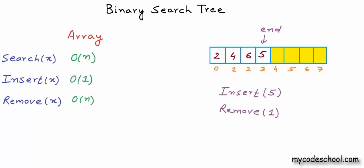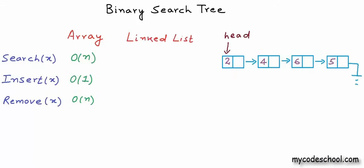Now let's discuss the cost of these operations if we use a linked list. I have drawn a linked list of integers here. The cost of search is again O(n), where n is the number of nodes — in worst case we traverse the whole list. The cost of insertion at head is O(1), and at tail it is O(n). We can choose to insert at head to keep the cost O(1). Removal is once again O(n) because we first have to traverse the list to find the record.